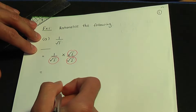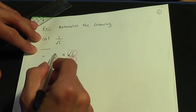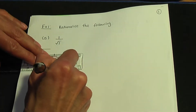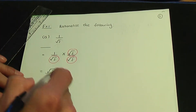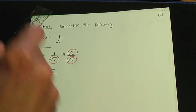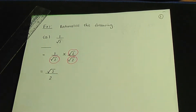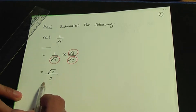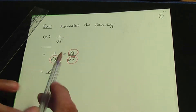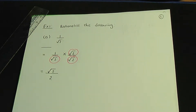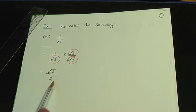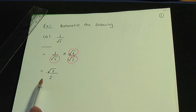Now we can simplify. One times root two on the top is root two. And root two times root two is two — remember, if you multiply two roots of the same term, you just ignore the root. As you can see from the solution, I no longer have a surd in the denominator, so I've rationalised.